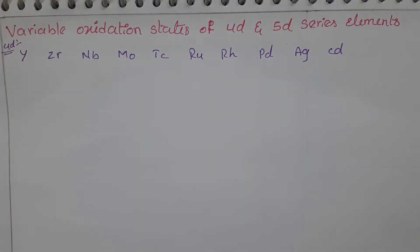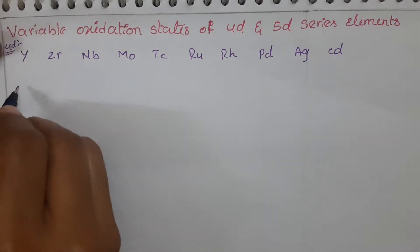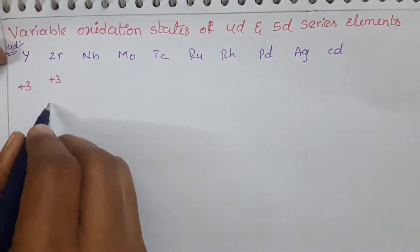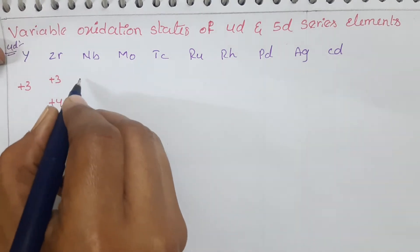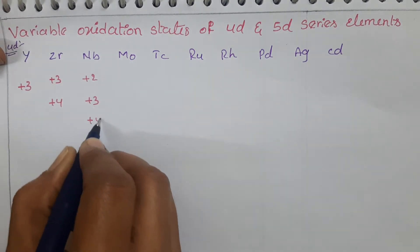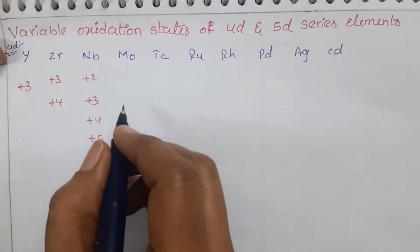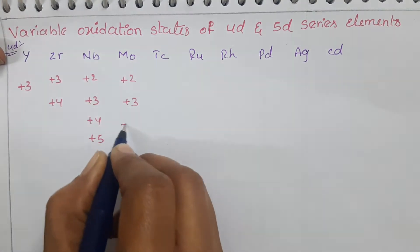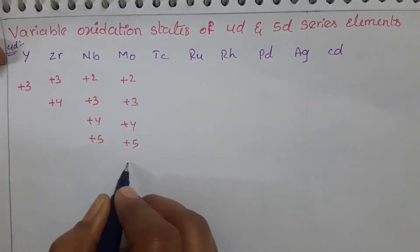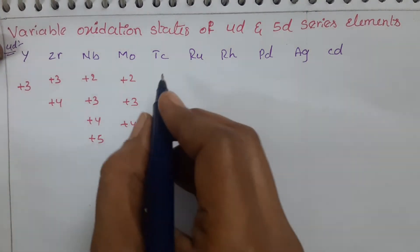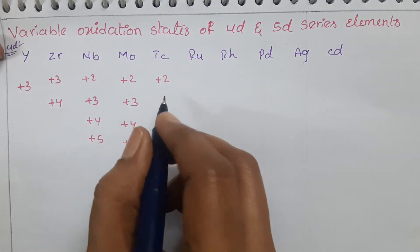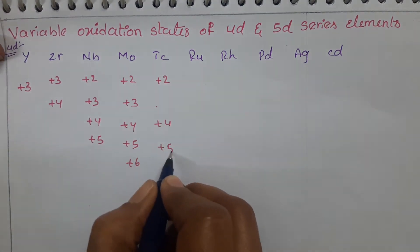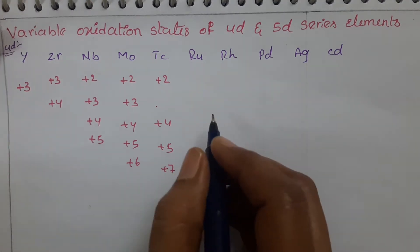Now let us see the oxidation states of these elements. Yttrium can show only plus 3 oxidation state. Zirconium can show plus 3 and plus 4. Niobium can show plus 2, plus 3, plus 4, and plus 5 oxidation states. Molybdenum can show plus 2, plus 3, plus 4, plus 5, and also plus 6 oxidation states. Technetium can show plus 2, plus 5, and also plus 7 oxidation states.